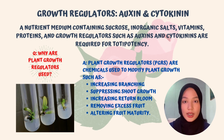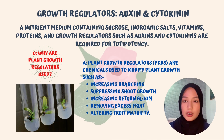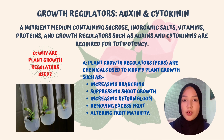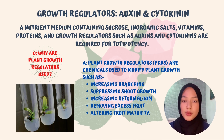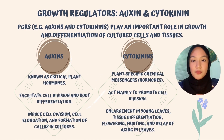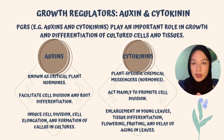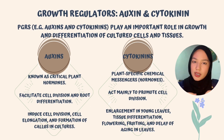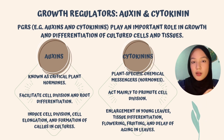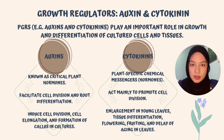Plant growth regulators are chemicals used to modify plant growth, such as increasing branching, suppressing shoot growth, increasing return bloom, removing excess fruit, and altering fruit maturity. Growth regulators play an important role in the growth and differentiation of cultured cells and tissues. Auxins, known as critical plant hormones, can facilitate cell division and root differentiation. Auxins also induce cell division, cell elongation, and formation of callus in cultures.